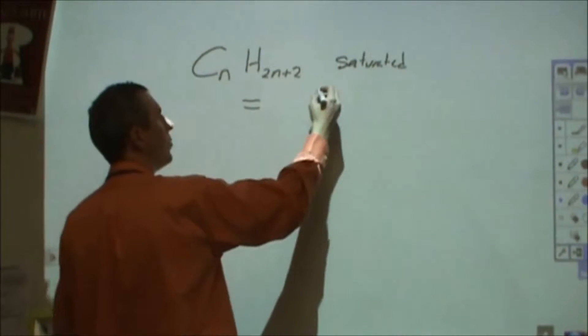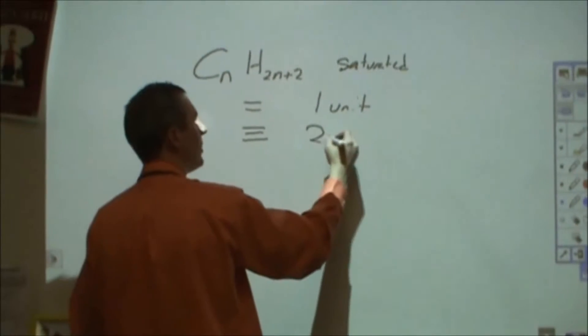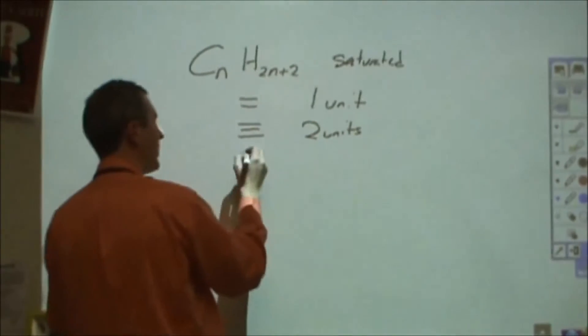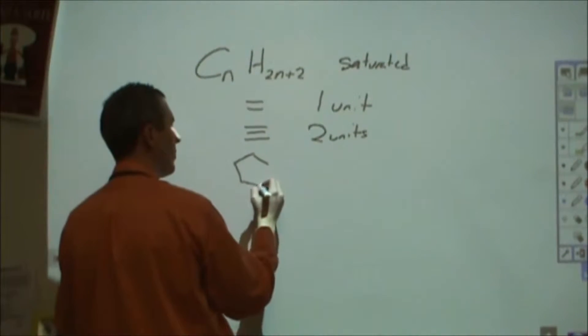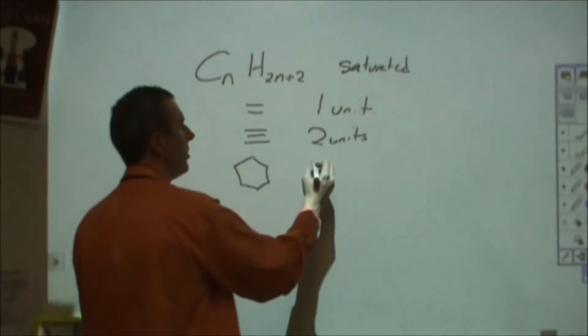So a double bond is one unit of unsaturation, a triple bond would be two units, and any time you have a closed ring, no matter how many pieces are in there, as long as it goes in a loop, that would be one unit of unsaturation.